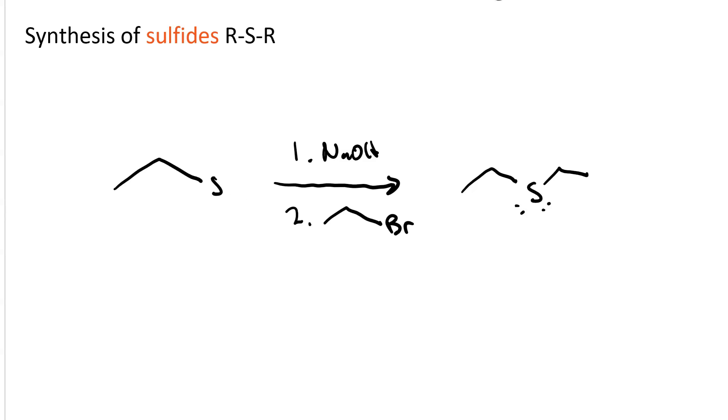Let's look at the mechanism. In the first step, sodium hydroxide acts as a base. Deprotonates the thiol. We get ethane thiolate.